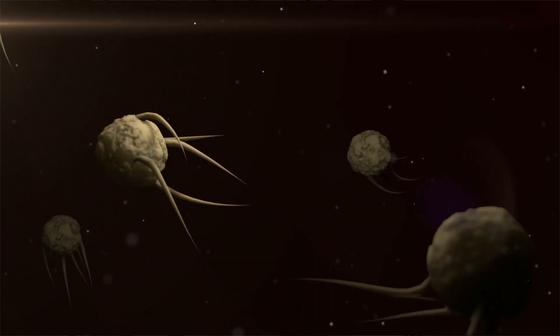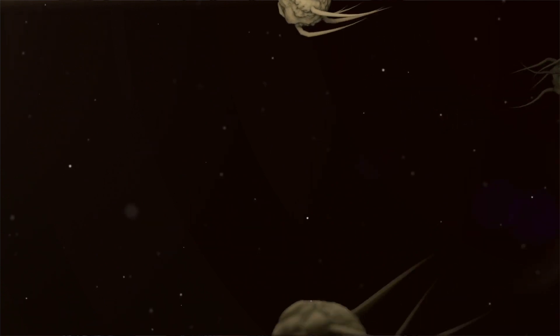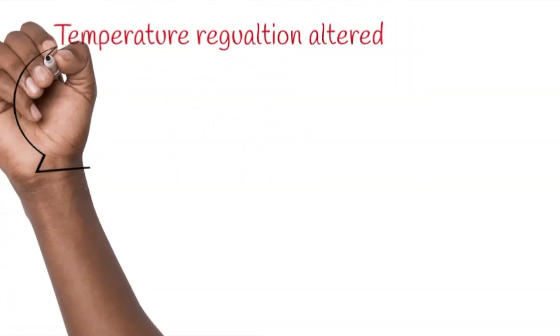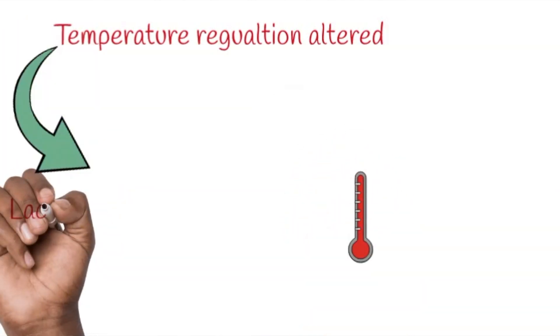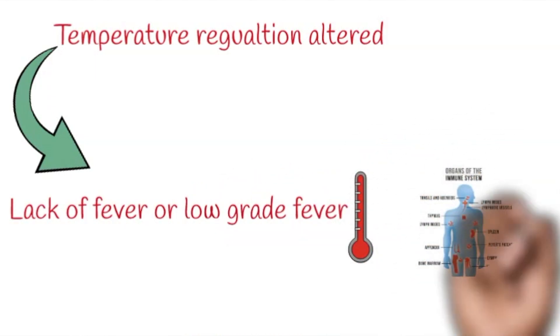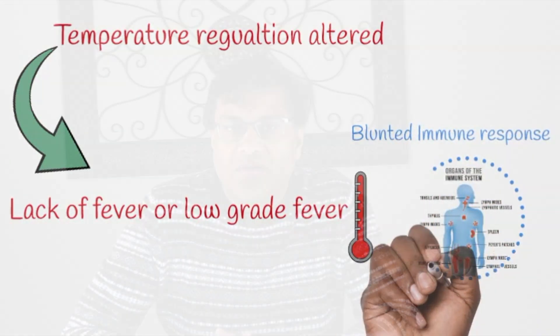Another symptom in older adults is that they do not mount a fever. Temperature regulation in older adults is altered — the typical COVID-19 temperature threshold is 100.4°F or above, but in older adults there may be no fever at all, or just a low-grade temperature around 99.5°F. One of the reasons for these atypical presentations is that the immune response in older adults is blunted.